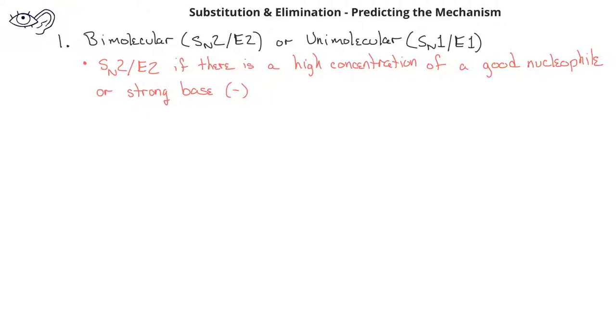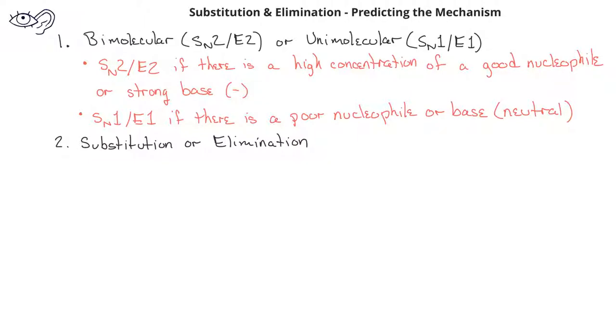On the other hand, you'll have an SN1 or an E1 mechanism if we have a poor nucleophile or weak base. In general, these poor nucleophiles or weak bases will be neutral. The second decision we have to make is between substitution or elimination reactions.